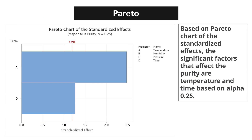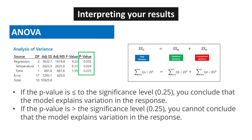Based on the Pareto chart of the standardized effects, the significant factors that affect purity are temperature and time, based on alpha 0.25. If the p-value is less than or equal to the significance level of 0.25, you conclude that the model explains variation in the response. If the p-value is greater than the significance level of 0.25, you cannot conclude that the model explains variation in the response.